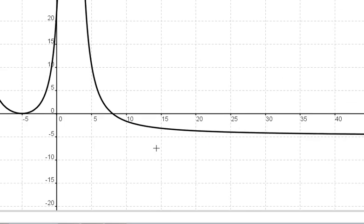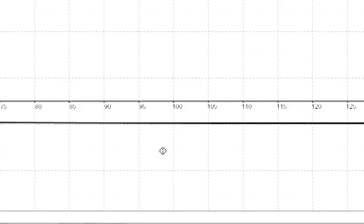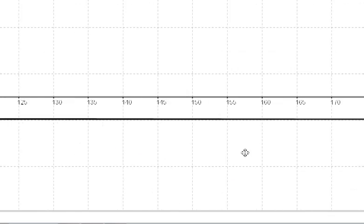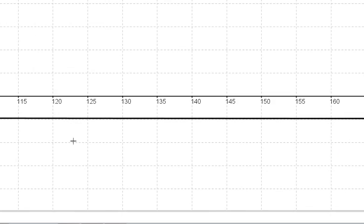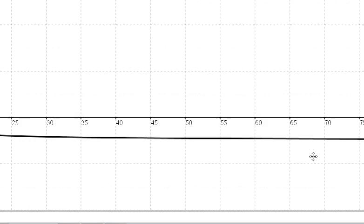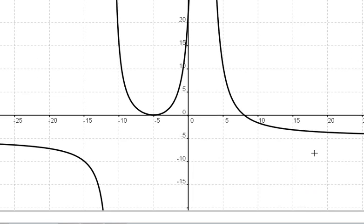When we go really far to the right, again, our outputs approach negative 5, but they never reach it. That tells us that we have a horizontal asymptote at negative 5.